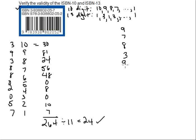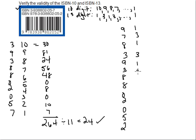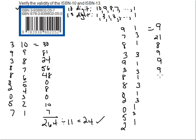So we have 9, 7, and 8, and then it's almost the same as the 10-digit one — it's just the last number that's different. We have 3, 9, 3, 8, 8, 0, 2, 0, 5, and then a 2 is needed to make this valid. Multiplying by 1 and 3 all the way down, we get 9, 21, 8, 9, 9, 9, 8, 24, 0, 6, 0, 15, and 2.